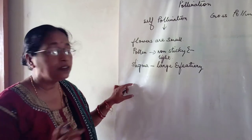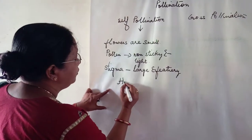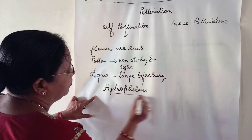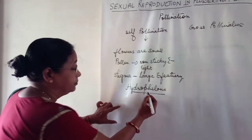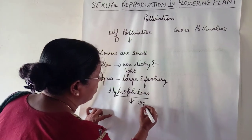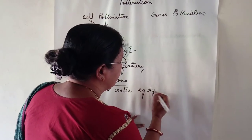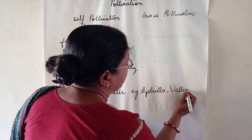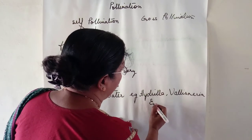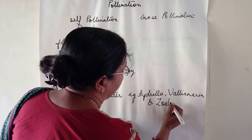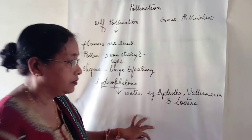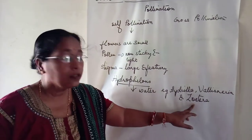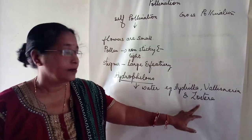Now we take the example of hydrophily — pollination by water. Examples include Hydrilla, Vallisneria, and Zostera, also known as eelgrass or seagrass. Hydrilla and Vallisneria are freshwater angiospermic plants, while Zostera is also known as eelgrass.